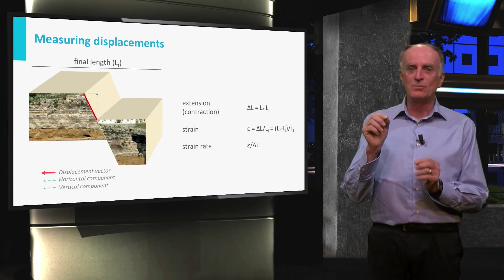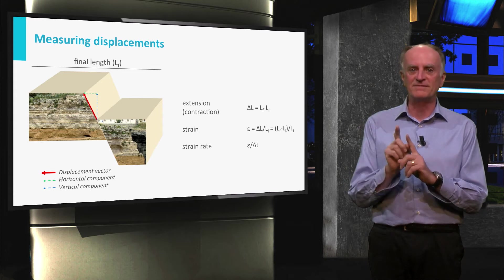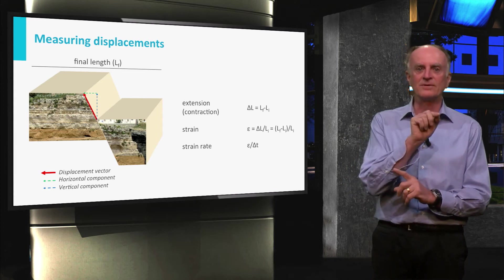Connecting two points which were in contact before deformation, a displacement vector is defined. The displacement vector can be split in a horizontal and a vertical component.